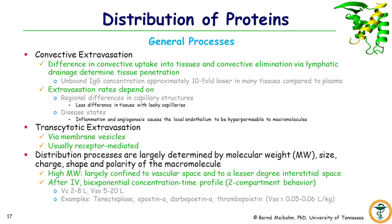Convective extravasation is driven by the difference in convective uptake into tissues and convective elimination via lymphatic drainage. Unbound IgG concentrations, as an example, are approximately tenfold lower in many tissues compared to plasma. The extravasation rate also depends on regional differences in capillary structure. In tissues with leaky capillaries, there is less concentration difference between the interstitial space and plasma. Disease states such as inflammation and angiogenesis can make the local endothelium hyperpermeable to macromolecules, making extravasation more effective.